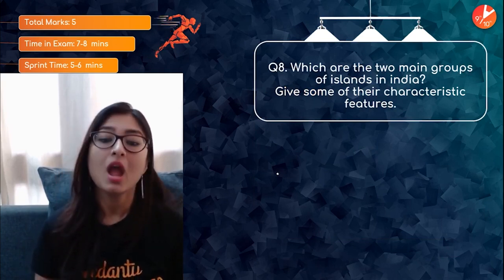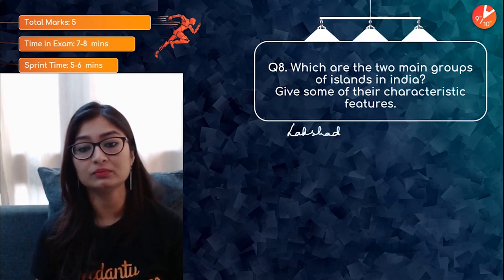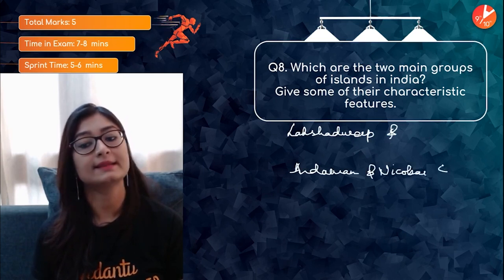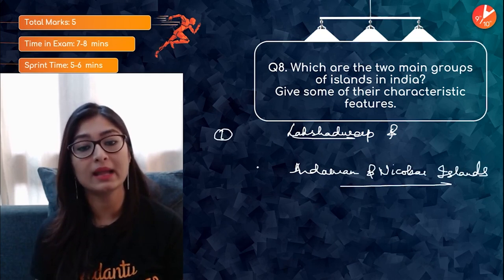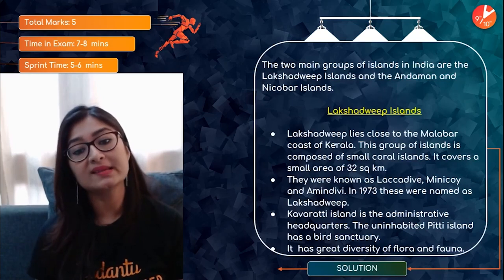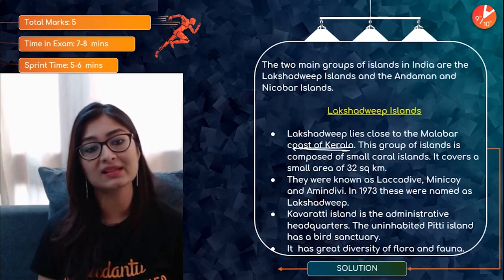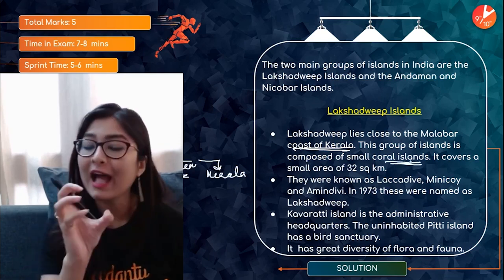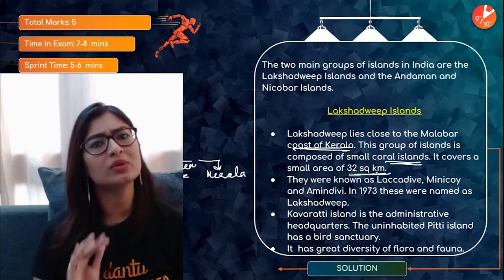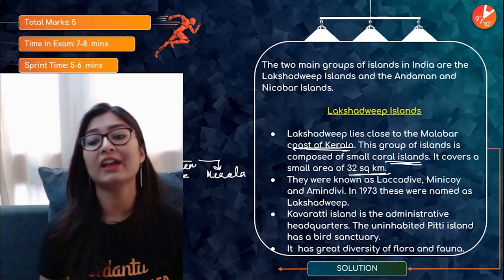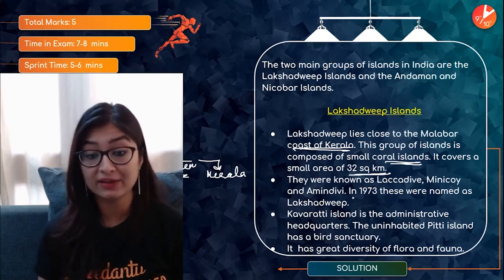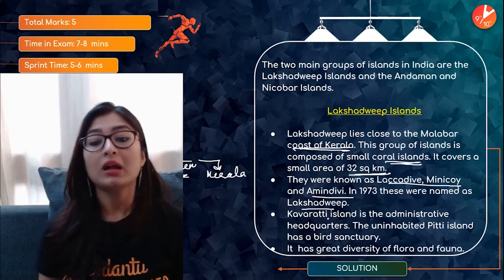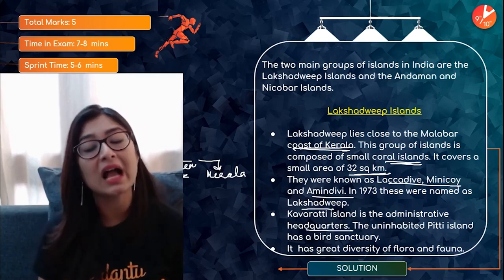The two main groups of islands in India are Lakshadweep and Andaman and Nicobar Islands. Lakshadweep lies close to the Malabar coast of Kerala. Earlier it was known as Laccadive, Minicoy, and Amindivi Islands; in 1973 it was renamed Lakshadweep. Kavaratti island is the administrative headquarters. The uninhabited Pitti island has a bird sanctuary, and the islands have great diversity of flora and fauna.